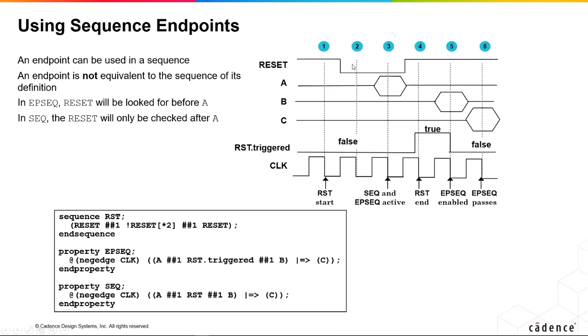Reset true, and then it not being true for two cycles, and then it being true. So the reset sequence starts at cycle one, finishes at cycle four. So that's when the RST triggered comes in cycle four until the next cycle where it is no longer true.